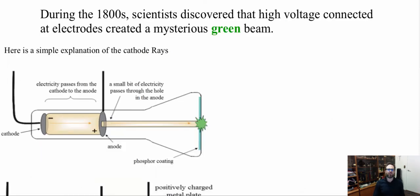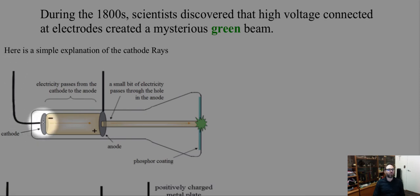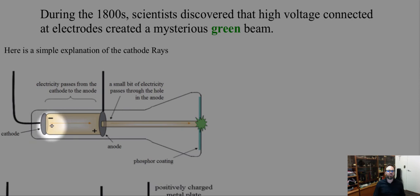What is a cathode ray tube? During the 1800s, scientists discovered that a high voltage connected to electrodes created a mysterious green beam. We have two electrodes: one solid one, and another separated with a hole in the middle. We connect the negative side of a power source to the solid one and the positive side to the one with a hole. Once current started flowing, it would shoot a ray and it would appear as a green light on a film.